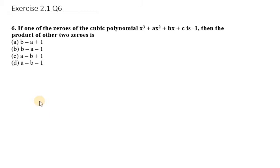Question number 6 says if one of the zeros of the cubic polynomial x³ + ax² + bx + c is minus 1, then the product of other two zeros is: (a) b minus a plus 1, (b) b minus a minus 1, (c) a minus b plus 1, (d) a minus b minus 1.